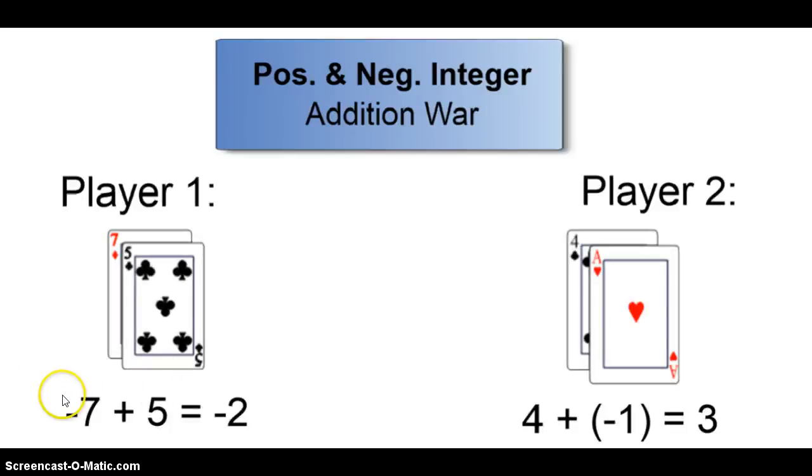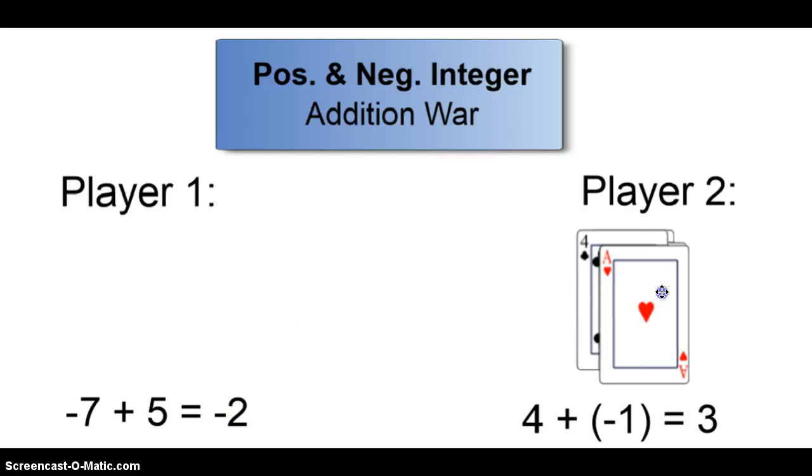Player one flips up a red seven and a black five, so that's negative seven plus five and that's going to equal negative two. Player two flips up a black four and a red ace, aces are always worth one. Four plus a negative one is three. Since three is greater than negative two, player two would keep all four of the cards.